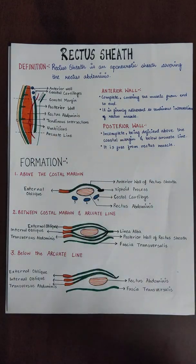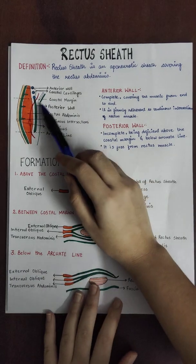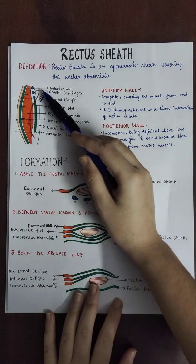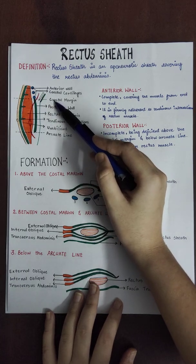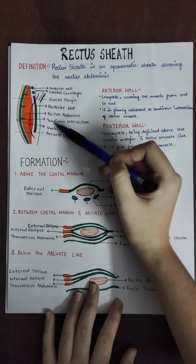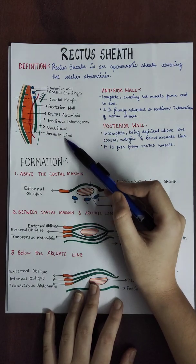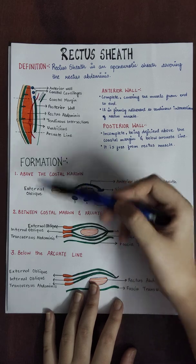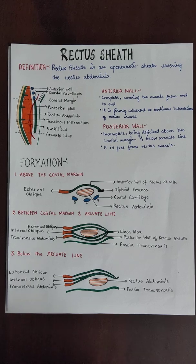Now let's see how the anterior wall and posterior wall are formed. This formation is divided into three parts. One is above the costal margin — the anterior and posterior wall. The second part is between the costal margin and arcuate line — how the walls are formed. And the last part is below the arcuate line — how the walls are formed. First of all, let's see above the costal margin.